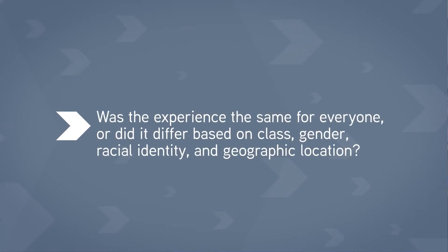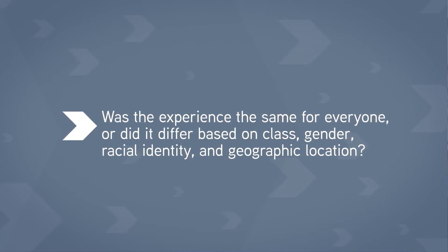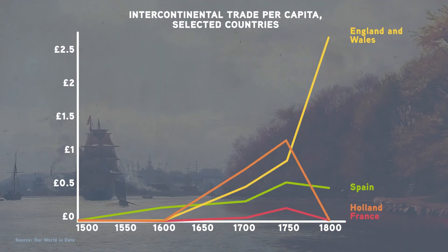Was the experience the same for everyone, or did it differ based on class, gender, racial identity, and geographic location? One way to begin to answer questions about the differing impacts of the Industrial Revolution is with data. Of course, we don't have complete sets of numerical data for this era, but we can combine the pieces we do have to get a picture of change. For example, industrialized countries could quickly create cheaper products, which meant they had more goods to export to other countries and could sell those goods much cheaper than local merchants and producers could. In this chart of exported goods, we see how exports from Britain rose dramatically as it industrialized.